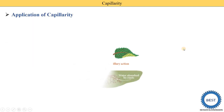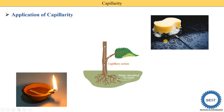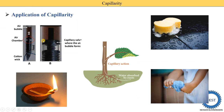Applications of capillarity in daily life: water is absorbed by the roots of trees due to capillary action. Oil is absorbed by the wick in an oil lamp, also due to capillary action. Water or liquid is absorbed by a sponge due to capillarity. The ink pen also works on the basis of capillary action, and water absorbed by a towel is also due to capillarity.